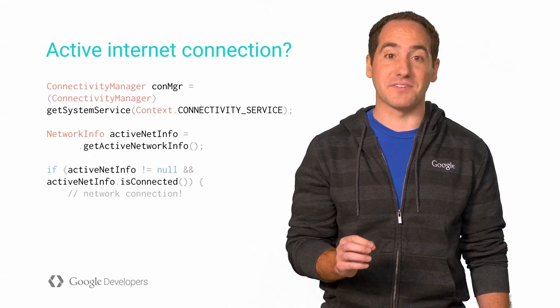Here's a gotcha to be aware of when you're porting your game. You probably already have code that checks to see if there's an active internet connection. On mobile, commonly you just have to worry about Wi-Fi and cellular. But on Android TV, you might also have Ethernet. The best way to check for an active internet connection without having to specify the type is to use the connectivity manager.